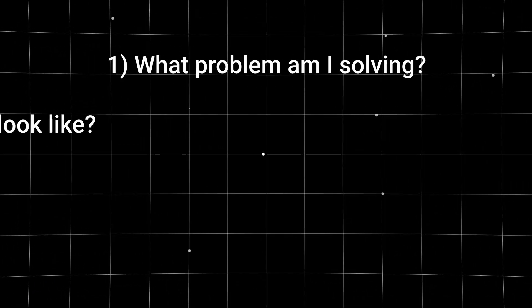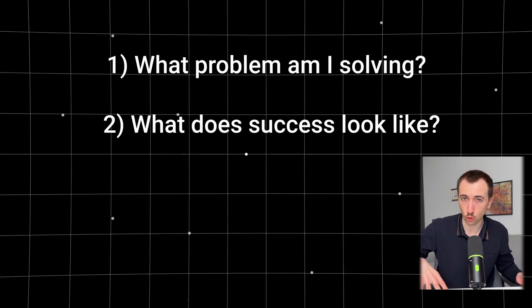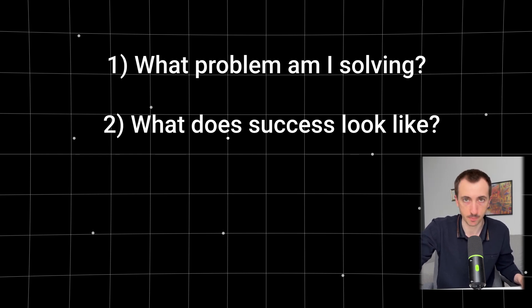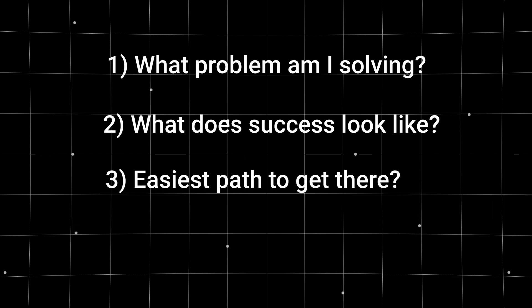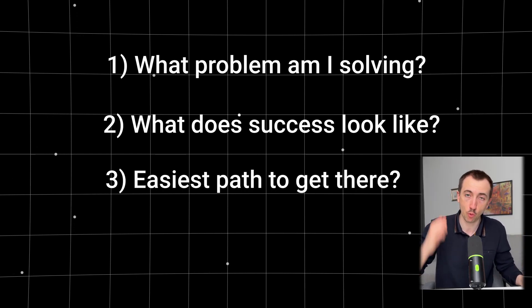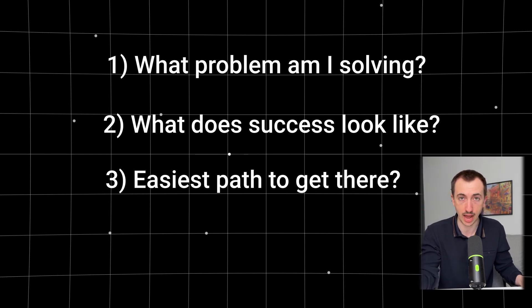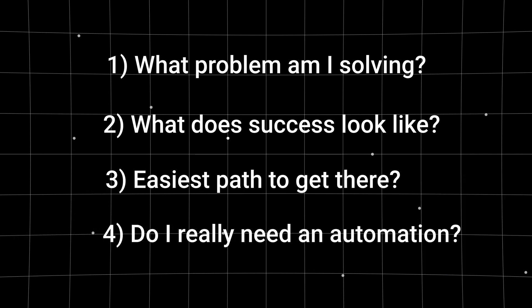So practically, how do you actually learn this? I think there are three questions to ask yourself. What specific problem am I solving? What does success look like — exactly what is the automation output supposed to be for me to be satisfied and implement it in my business? And what is the simplest path to get there — the smallest number of steps to reach the desired outcome? Then based on that, do I really need a workflow? Because if something you're trying to automate only takes you 30 seconds every day, it's probably not worth automating.